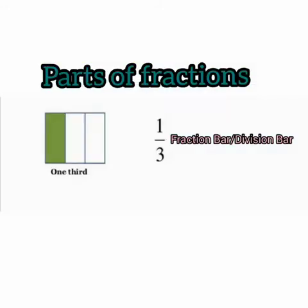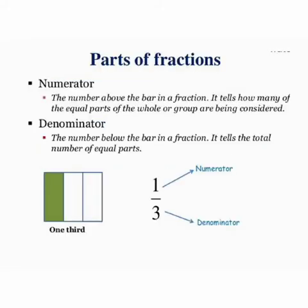Now, let us talk about parts of a fraction. Look at the fraction one upon three. In a fraction, the line that separates the numbers is called the fraction bar or division bar. The numerator is the number above the bar in a fraction. It tells how many of the equal parts of the whole or group are being considered. The denominator is the number below the bar in a fraction. It tells the total number of equal parts. In the fraction one upon three, one is the numerator and three is the denominator.